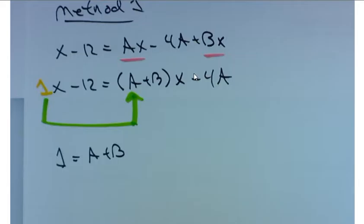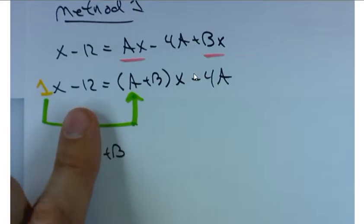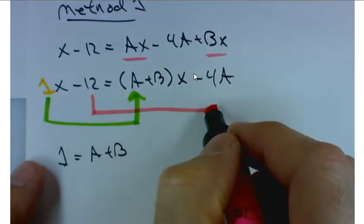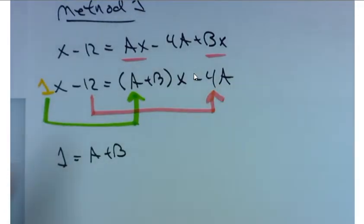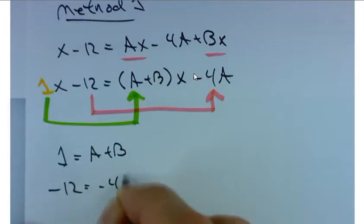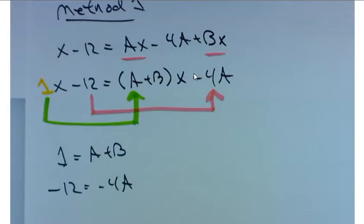Now I can come up with another equation as well. Because on the left hand side, I have a constant. What's the value of my constant on the left hand side? Negative 12. What's the value of my constant on the right hand side? Negative 4A. So that's another equation: negative 12 equals negative 4A. And all I'm doing here is equating coefficients. But that gives me a little 2 by 2 system of equations.